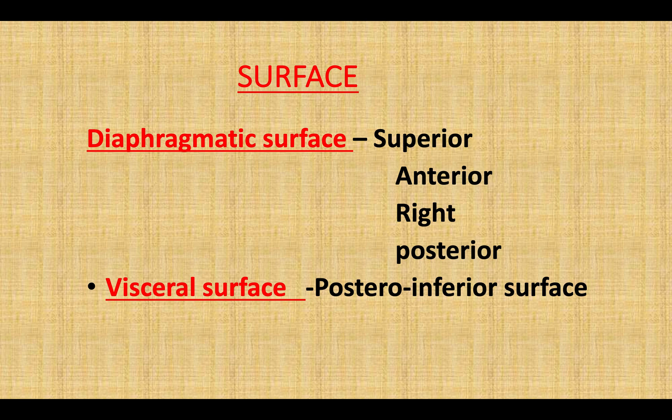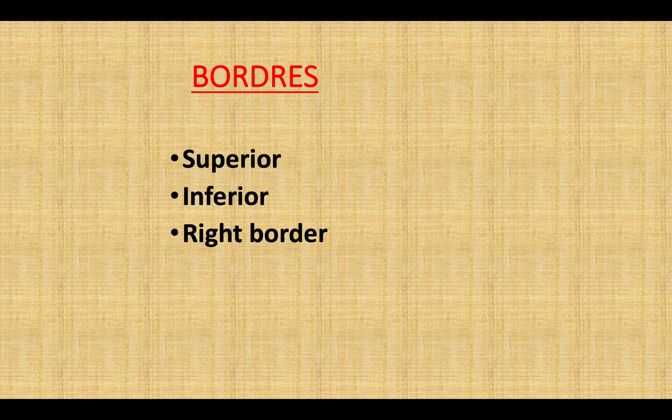Surfaces of the liver: there are two surfaces — the diaphragmatic surface and the visceral surface. The diaphragmatic surface includes the superior, anterior, right, and posterior surfaces. The visceral surface is also known as the postero-inferior surface. Borders include the superior border, inferior border, and right border.